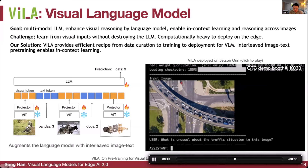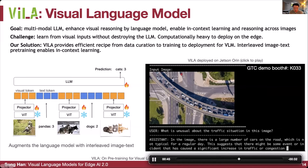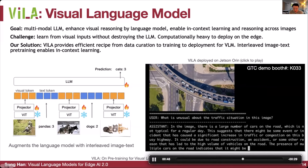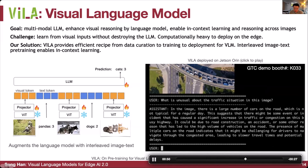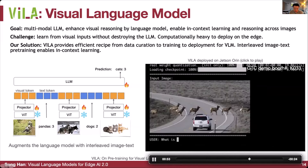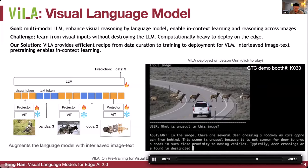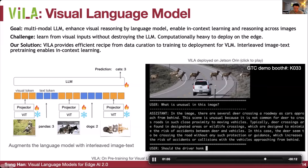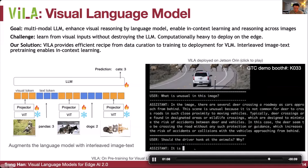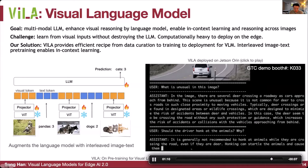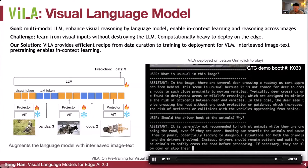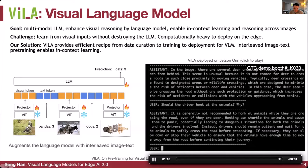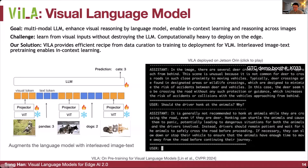We can ask what is unusual about a satellite or UAV image — it can tell there are a large number of cars on the road due to a significant increase in traffic. In a self-driving corner case scenario, it can see a lot of deer and note it's not common for deer to cross the road. When asked if the driver should honk at the animals, it answers it's generally not recommended to honk at animals.